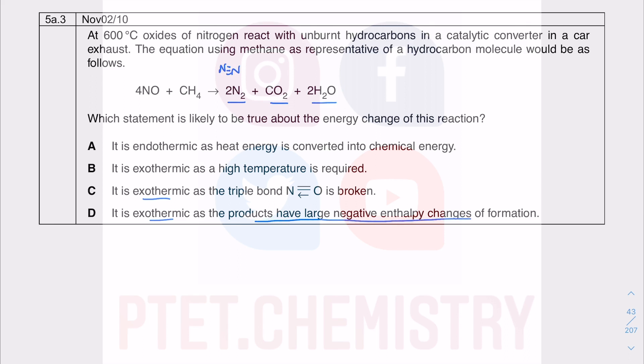The products will have large negative enthalpy changes of formation, despite me saying that the formation of N-N is going to give out a lot of energy, but that is the reaction that produces the N-N from the products. However, you've got to take in mind that the formation, the enthalpy of formation of nitrogen is actually zero. Because it's forming one mole of the substance from its element, which is also N2. So that's why the enthalpy of formation of any element is zero.